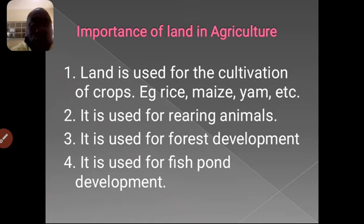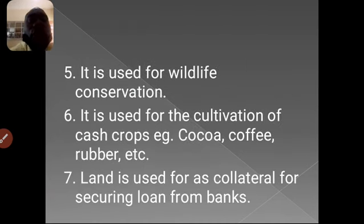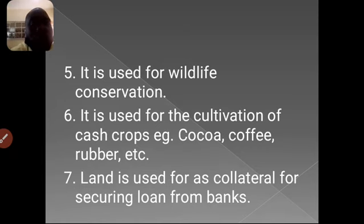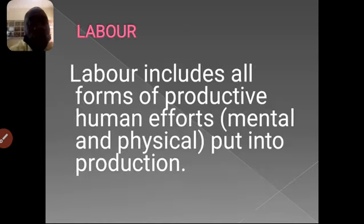These forest resources are cultivated and planted in the forest. Land can also be used for fishpond development — that is the construction of fishponds where we use for rearing of fish. It is used for wildlife conservation, and it is used for cultivation of cash crops such as cocoa, coffee, and rubber. Land is also used as collateral for securing loans from banks.